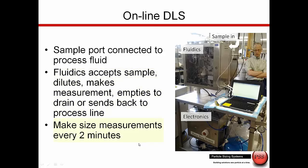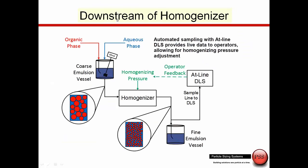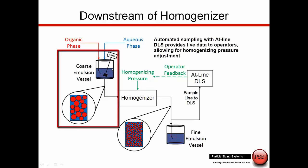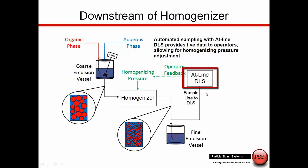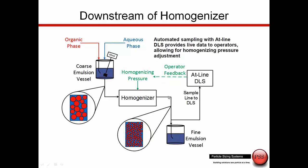The cycle time was on the range of about every two minutes. The process we're monitoring is downstream of a high-pressure homogenizer. Prior to the homogenizer, we have the organic phase and the aqueous phase going into a mixer for coarse mixing. Then this mixed sample comes into the homogenizer where we do the very large size reduction — making large particles very small. It's downstream of this homogenizer where we'd like to take the measurement, and through operator feedback, control this homogenizer to generate particles at the optimum particle size.